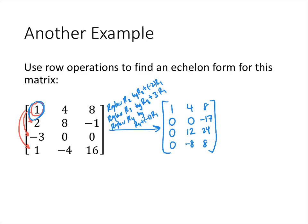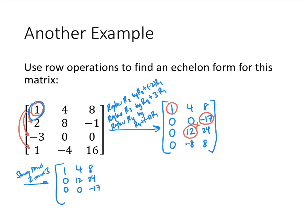So that's what our matrix looks like now. We've got our leading entry in the first row. But we have a problem: the leading entry in the second row is in the third column, while the leading entry in the row below is in the second column. That doesn't fit echelon form — leading entries have to go down and to the right. So we need to swap rows 2 and 3. After the swap: row 1 is still 1, 4, 8; row 2 becomes 0, 12, 24; row 3 is 0, 0, negative 17; and row 4 is 0, negative 8, 8.